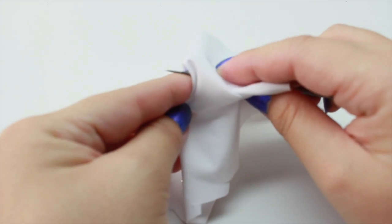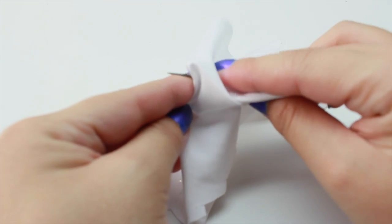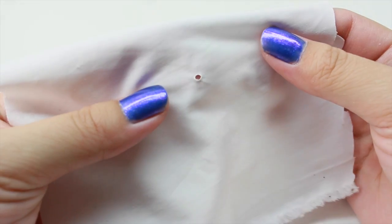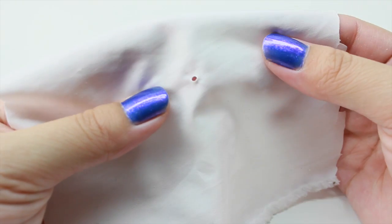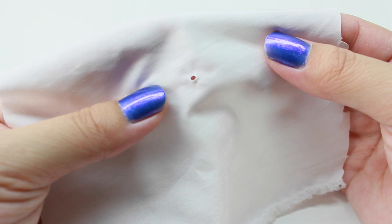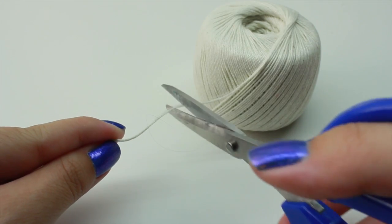Here you can see I made a hole. We don't want the hole to be too big because we want to make sure that the string will stay in there. The next thing we're going to do is cut out a piece of string, so go ahead and take your string and cut out a piece.